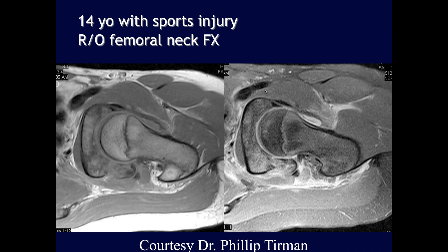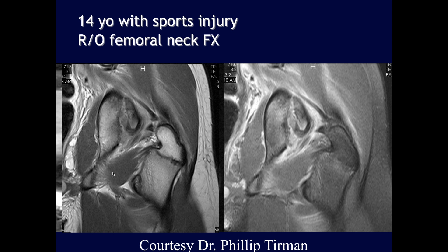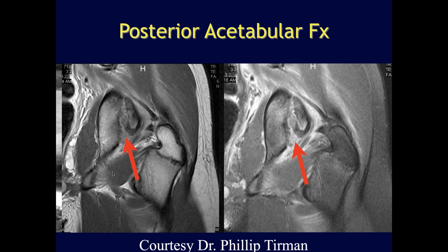A 14-year-old with a sports injury presenting to rule out femoral neck fracture — the femoral neck is intact. However, there is a posterior rim fracture of the acetabulum with extensive edema throughout the acetabulum, and additional fracture lines extending through the acetabular rim. A large fragment appears completely detached and distracted.